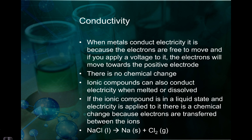We know that metals are going to be conductive — they're conductive as solids and also if we melt them down. That's because the electrons are free to move. So if you apply a voltage to it, those electrons are going to move towards the positive electrode, however you end up applying that electricity. There is no chemical change when this happens — you're just simply moving the electrons around.